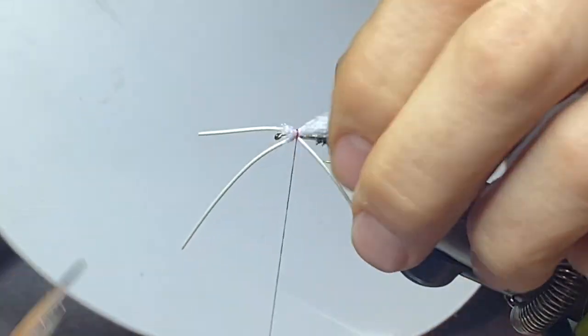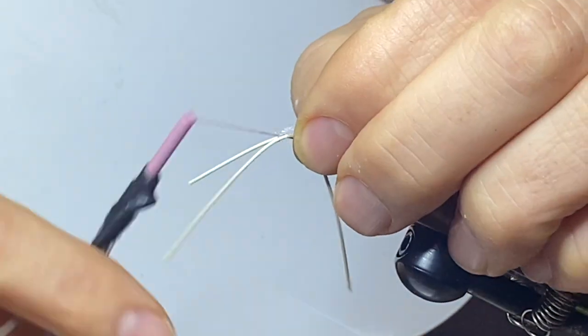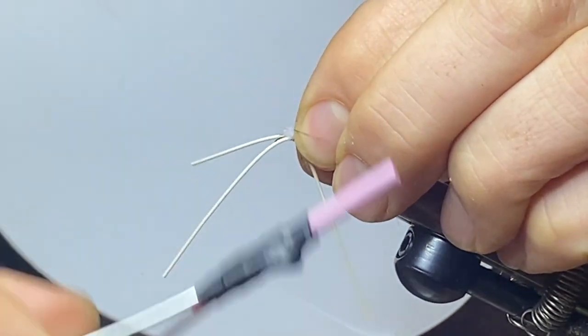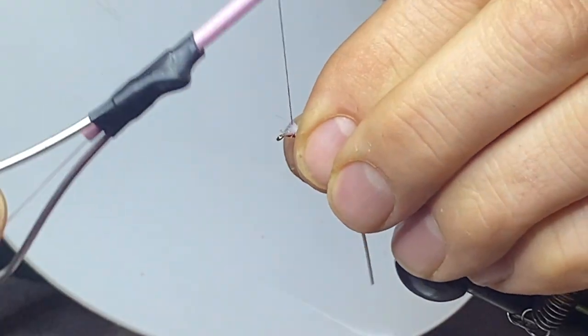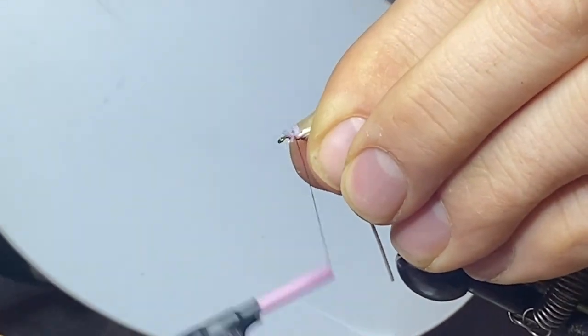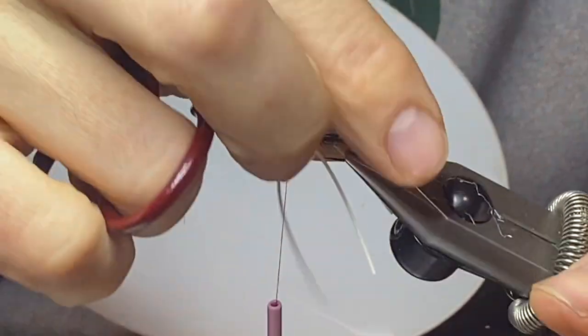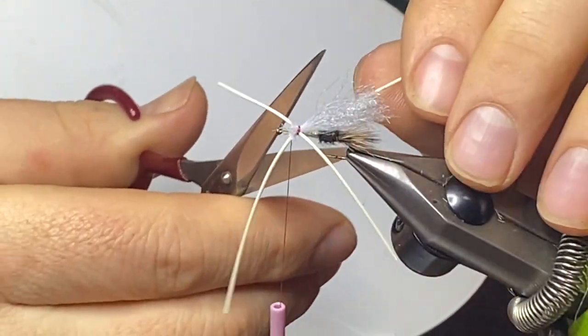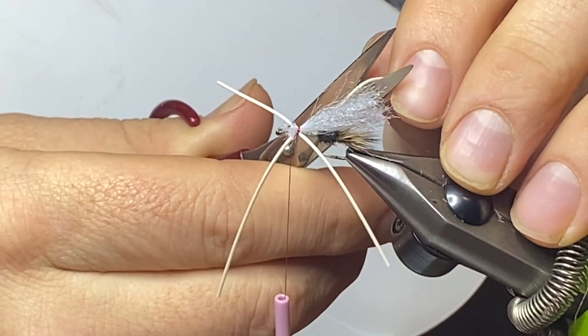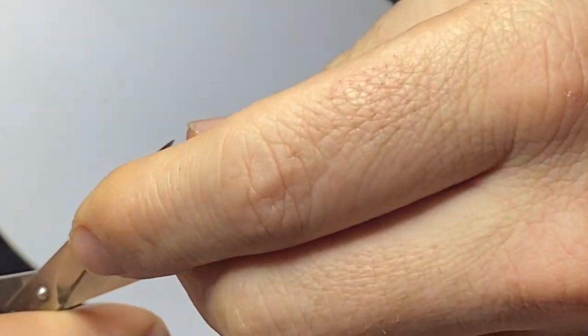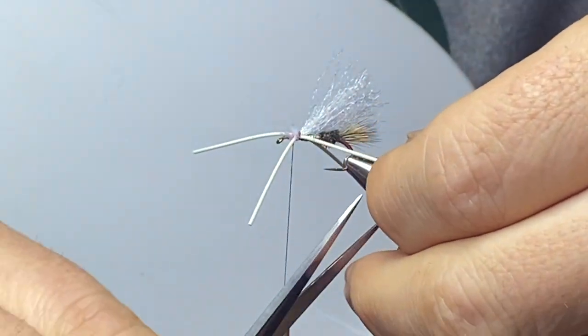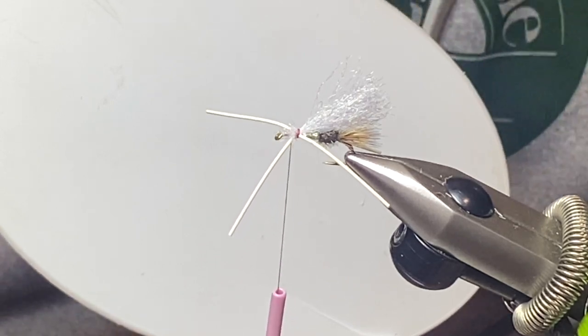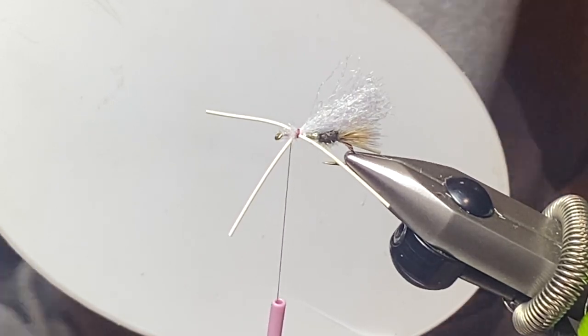The nice thing about synthetics is you can always clip them. I'm gonna go into that synthetic just a bit there, and I'm gonna pull those legs back again, get as much of it as possible. And I'm just gonna clip these legs. Can't go too short, so if you come too short, yes, start over. Something about don't let perfect be the enemy of good when it comes to rubber legs.